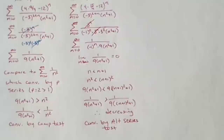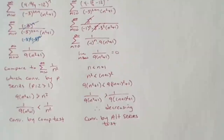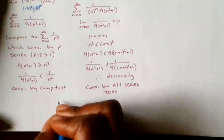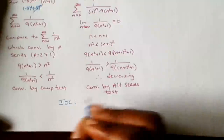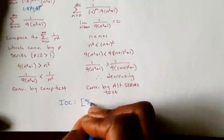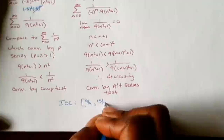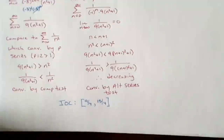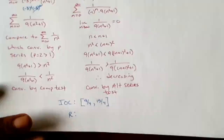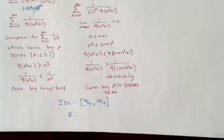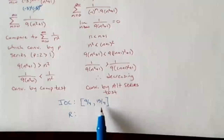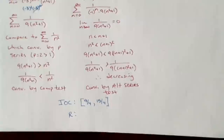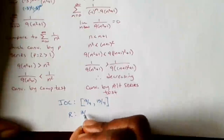Both endpoints converge, so my interval of convergence is [9/4, 15/4] with brackets. The radius is half the distance of that interval: from 9/4 to 15/4 the distance is 6/4, so the radius is 3/4.